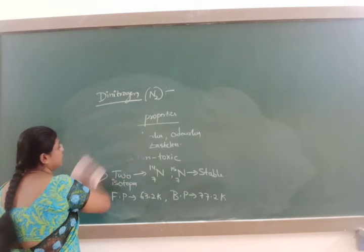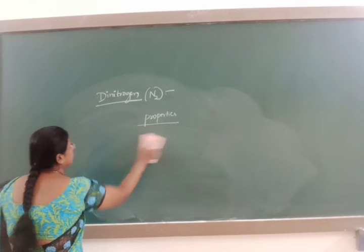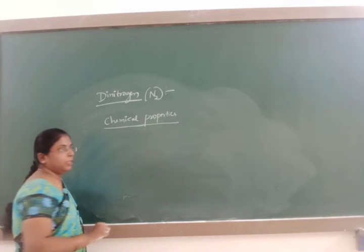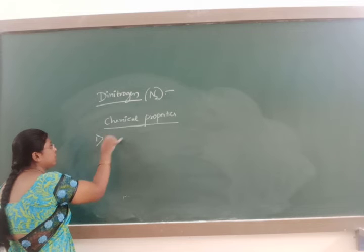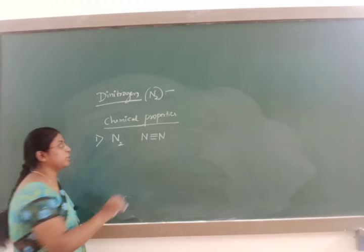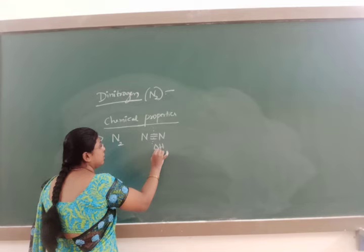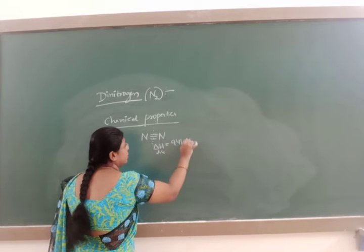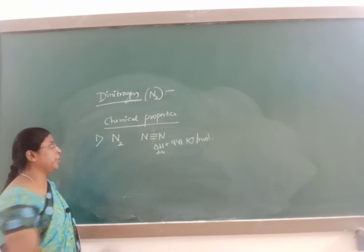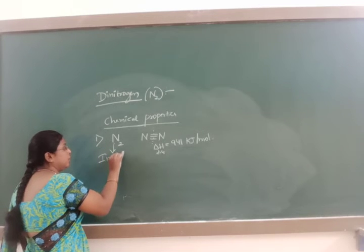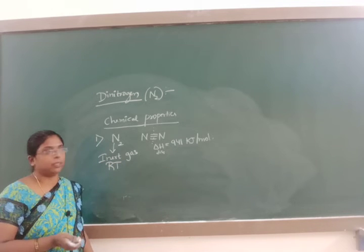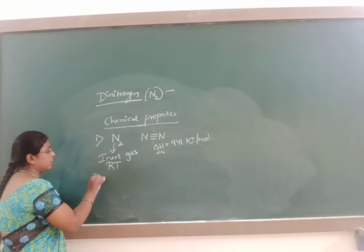Next come the chemical properties of dinitrogen. Between the nitrogen atoms, there is a triple bond present, and it has a high bond dissociation enthalpy of 941 kJ/mol. At room temperature, N2 is an inert gas. Because of the high bond dissociation enthalpy, N2 is inert at room temperature.